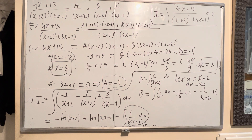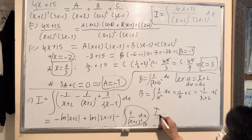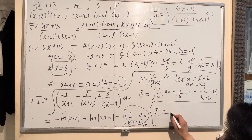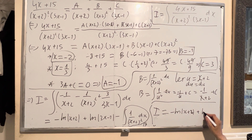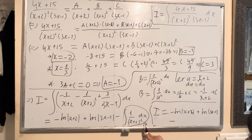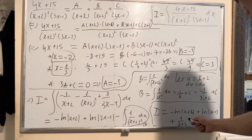Now you can rewrite B inside the expression. So I equals negative ln of x plus 2, plus ln of 3x minus 1, plus 1 over x plus 2, plus c. That's the final answer.